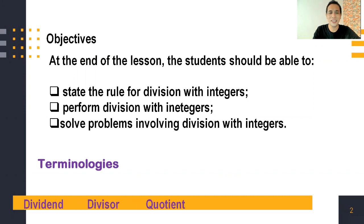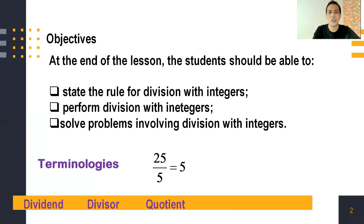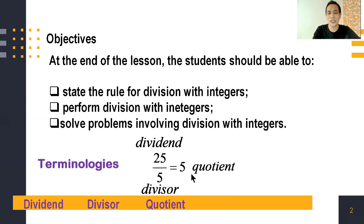There are terminologies. First, we have dividend; second, divisor; and third, quotient. We will define each of these. If we have the example 25 over 5 which is equal to 5, we will identify which is the dividend, divisor, and quotient. Of course, 25 is our dividend, 5 is our divisor, and our quotient is 5.